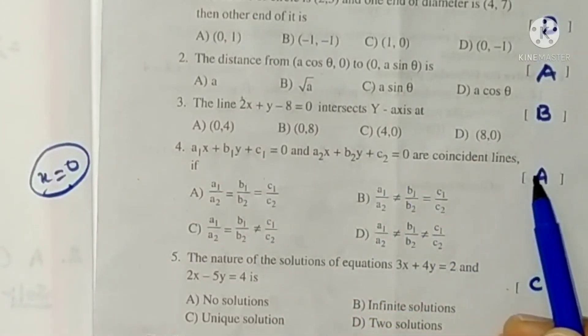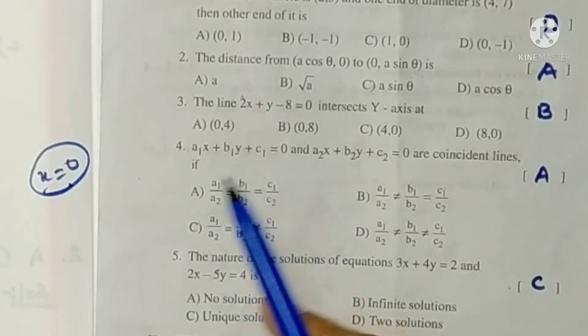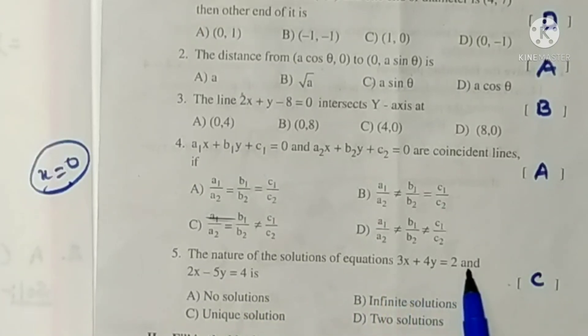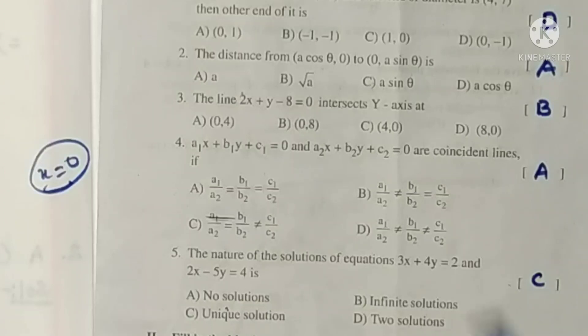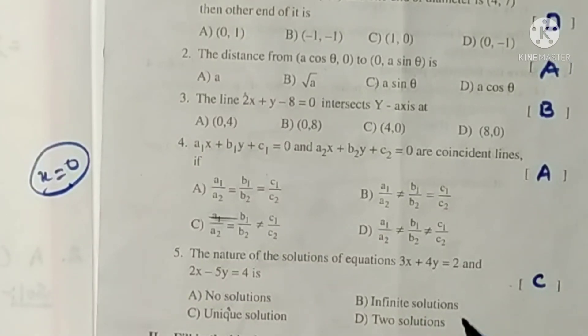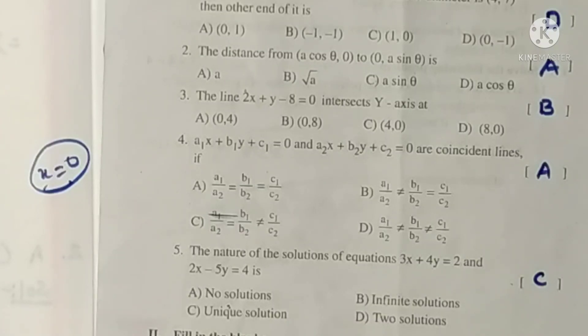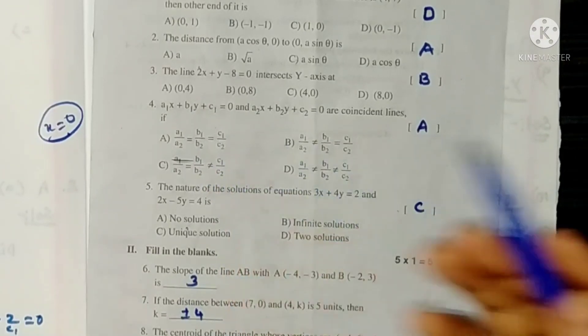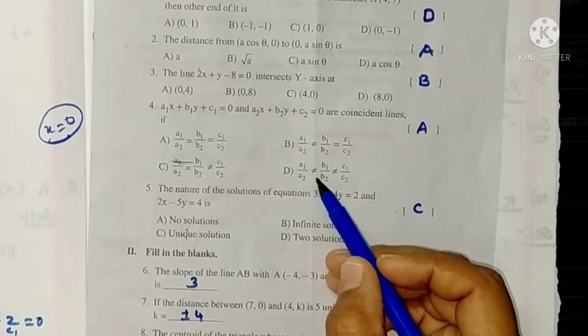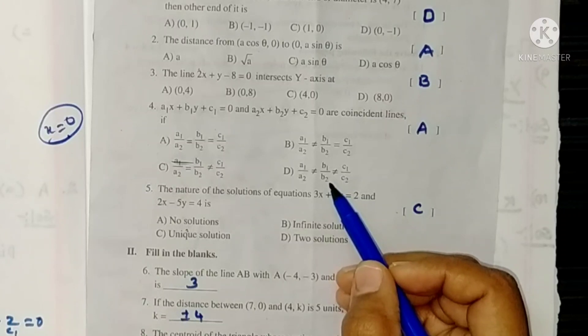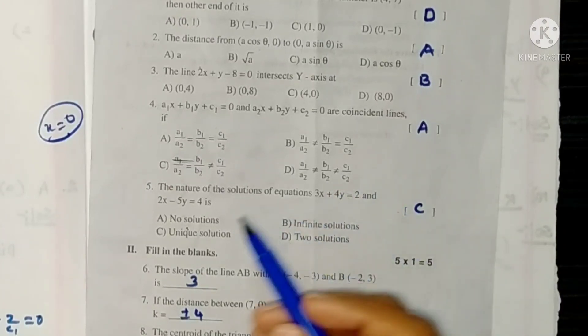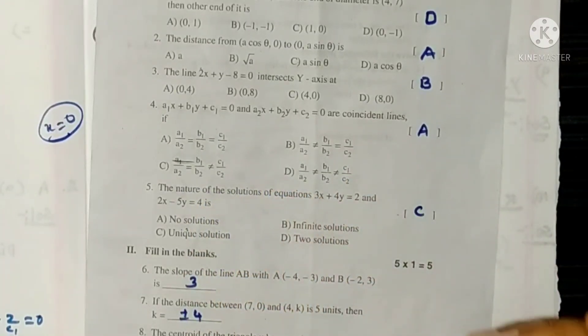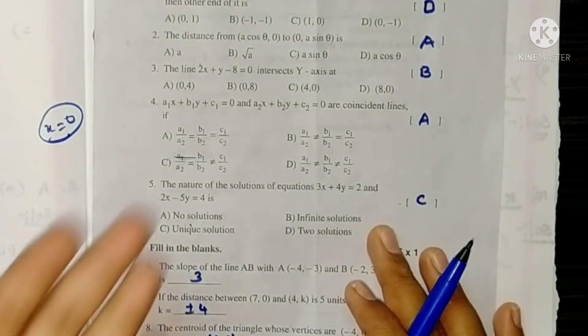Fourth one, these two lines are coincident lines if - this is directly one, so coincident. The nature of the solution of equations - no solution, infinite, unique or two solutions. Two solutions concept we don't have here. The options given are: a1 by a2 equals to b1 by b2 equals to c1 by c2 means infinitely many solutions. a1 by a2 not equals to b1 by b2 means intersecting lines, only one solution. If these two are equal then they are parallel, no solution.